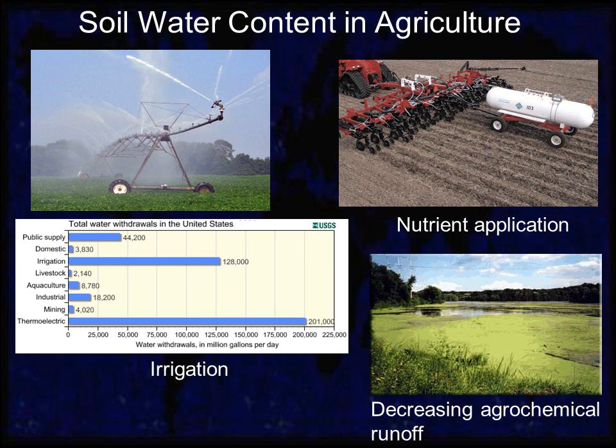I'd like to begin with a short overview of some of the reasons for monitoring soil water content in agriculture. The first and most obvious reason is for irrigation. Irrigation is the largest consumptive use of water in the United States, and water for irrigation has historically been underpriced relative to its economic benefit, which encourages farmers to irrigate. This policy is now changing in many areas, so farmers have both economic and environmental motivation to conserve water. GPR can help determine the water content distribution across the field, so farmers can tell more accurately when to irrigate and what portions of the field should receive more water.